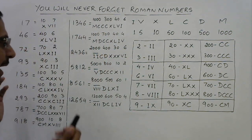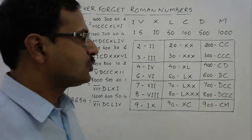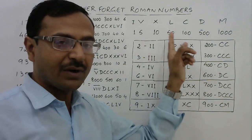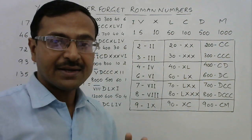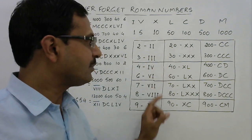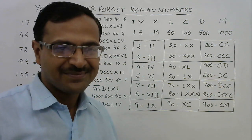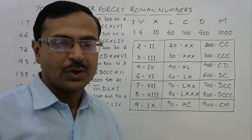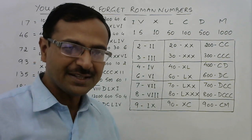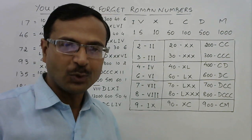Friends, I hope you've understood this video. To remember any Roman numeral, all you need is the representation of I, V, X, L, C, D, M — and the single digit table scaled by tens and hundreds. If you liked this video, do share it with your friends and subscribe to the channel for more videos.